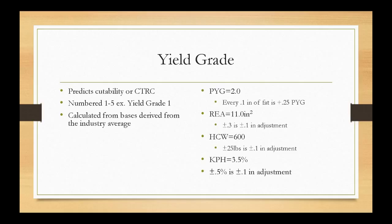The PYG, or preliminary yield grade, is measured in tenths of fat. When we rib the beef carcass between the twelfth and thirteenth rib, three-quarters up the ribeye, we measure the subcutaneous fat. For every tenth of an inch of fat, we adjust the PYG up 0.25. So if a carcass had zero tenths of fat, it would have a PYG of 2.0. If it had one tenth of fat, it would have a PYG of 2.25.